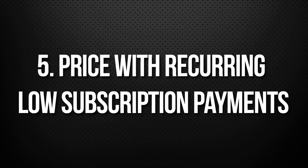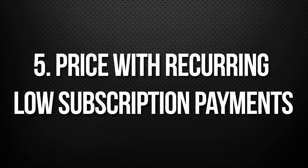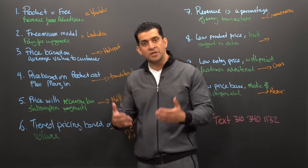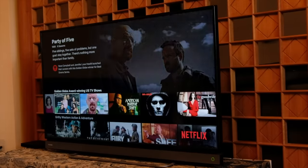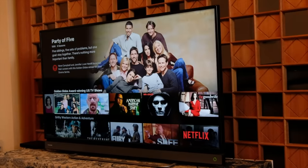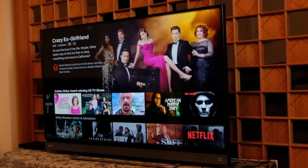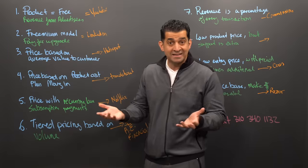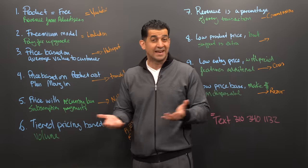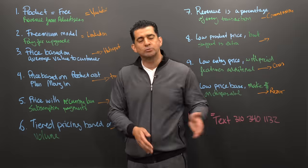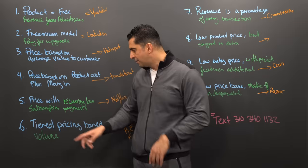Number five is price with a recurring low subscription payment — hence Netflix. It's a very common model today. Netflix at $7.99, $9.99, $12.99 — that's not a lot of money, but times 150 million customers, it's a lot of money.